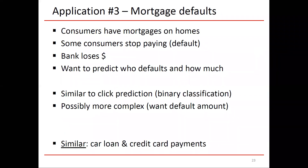A third application is mortgage defaults. In the U.S., consumers often take out mortgages on homes — a mortgage is a loan on a home. For a home typically costing hundreds of thousands of dollars, it's called a mortgage, and the word means the lender technically owns your home until you've paid it off. As long as you're making payments, you can live there as if it's 100% your home, but the moment you break the rules, there could be problems.